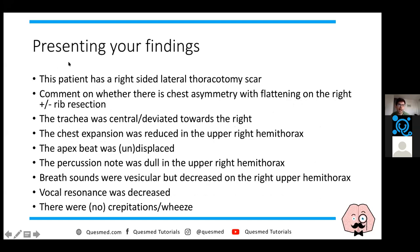When presenting your findings, you would say: the patient has a right-sided lateral thoracotomy scar. Note whether there is chest asymmetry or flattening - if they don't have a lung on that side after pneumonectomy, there may be reduced expansion. The trachea could deviate toward the side of a pneumonectomy. Chest expansion may be reduced; percussion may be dull. Breath sounds may be vesicular but decreased on the relevant side. Note vocal resonance and any wheeze. For example, if a patient has wheeze and a scar, consider COPD with lung reduction surgery, or COPD with a tumour as in our case.